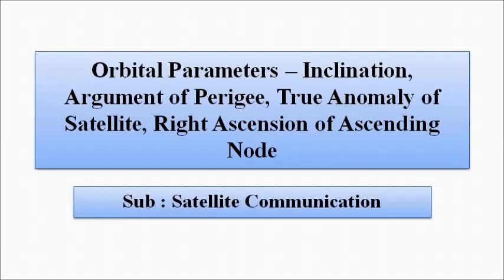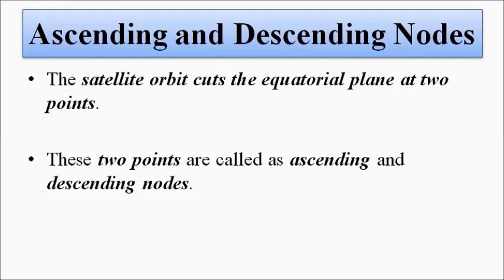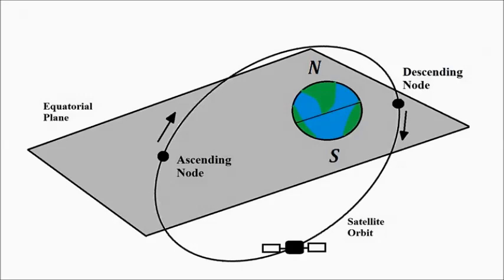We have already discussed about ascending and descending nodes, and they will be used here. The satellite orbit cuts the equatorial plane at two points, and those two points are called nodes. The descending node is where the satellite makes a transition from the northern to the southern hemisphere. The ascending node is the point where the satellite in its orbit crosses the equator and moves from the southern hemisphere to the northern hemisphere.